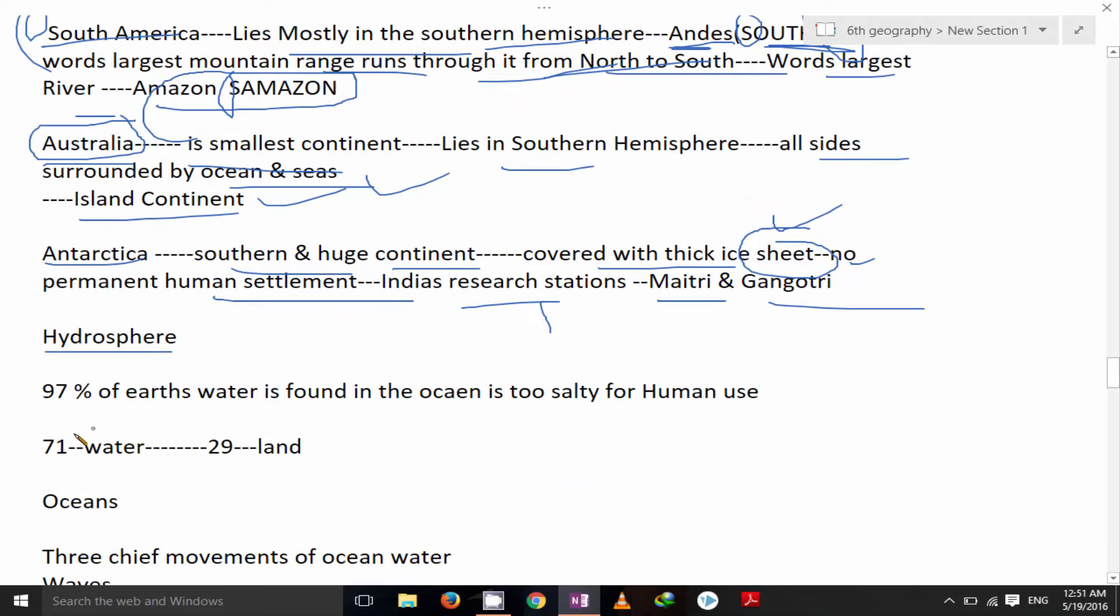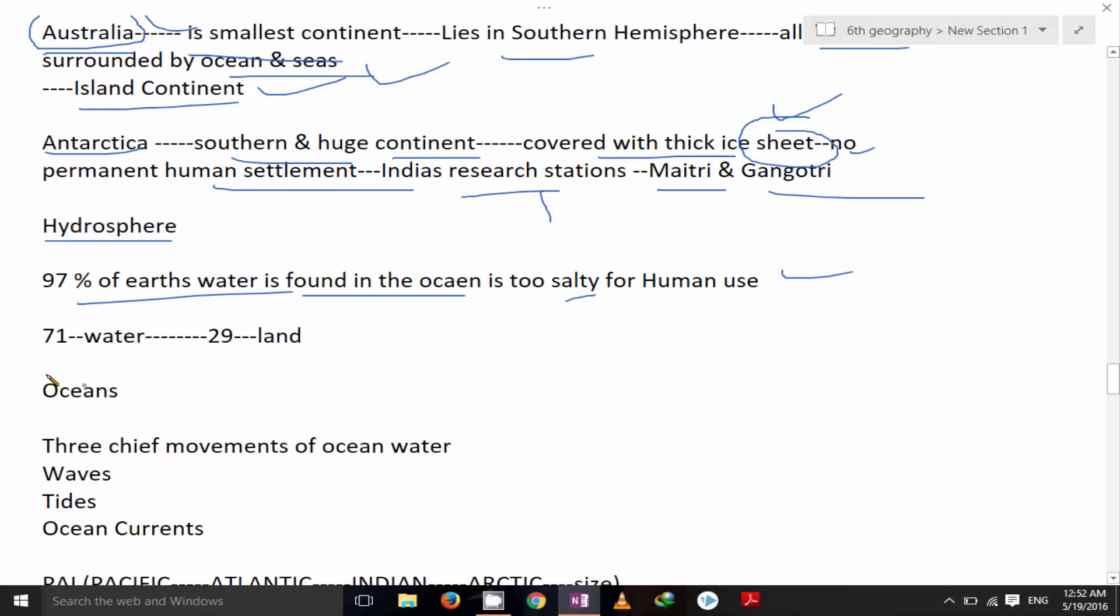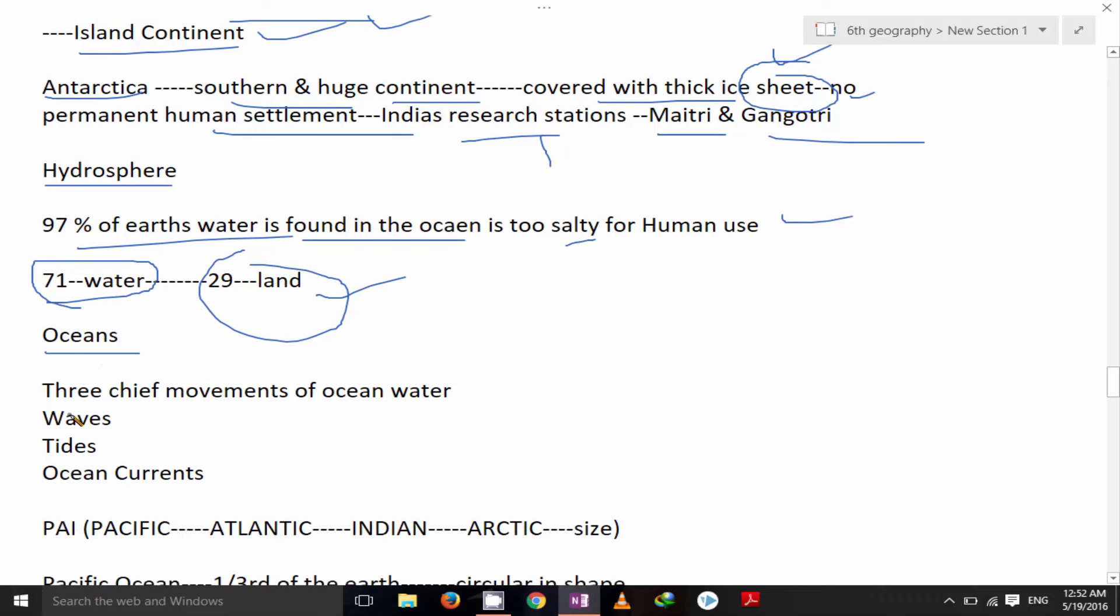Hydrosphere. 97% of the earth's water is found in the ocean which is too salty for human use. 71% of the area of the earth is covered with water and 29% is land. Three chief movements of the ocean water: waves, tides and ocean currents.